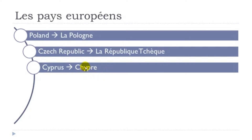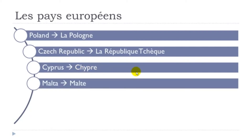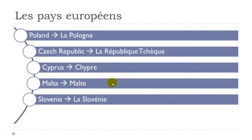Chypre — remember we have the Y letter here, but phonetically when you pronounce it, it sounds like 'ee'. Chypre. Malte — you don't insist on the final E. Malte. La Slovénie — the E accent aigu here is pronounced 'é'. The final E as usual is not pronounced. La Slovénie.